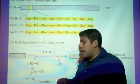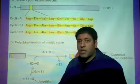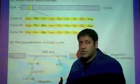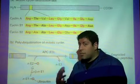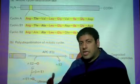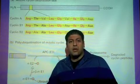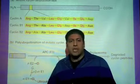By mutating the destruction box, the APC, the anaphase promoting complex, would fail to recognize the destruction box and not be able to ubiquitinate it. Therefore, the cyclin B or the cyclin protein would remain non-degraded. It would not be able to be destroyed.